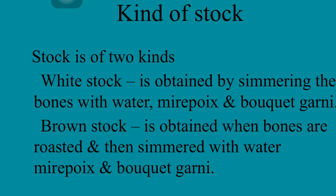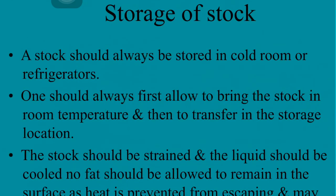For white stock, we put the bones directly into water — we don't roast them. We add our mirepoix and bouquet garni and simmer for several hours. For brown stock, we roast the bones and vegetables in the oven first. This process is called caramelization. Because of this caramelization, the stock turns brown — which is why we call it brown stock. Brown stock is very flavorful and very strong in flavor compared to white stock.